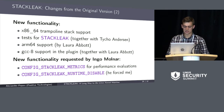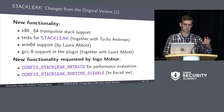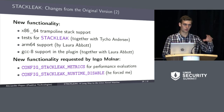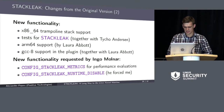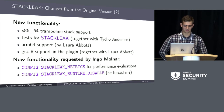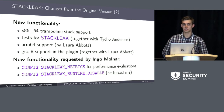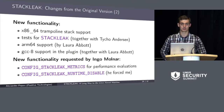New functionality was also requested by Inge Molnar: the StackLeak metrics feature which allows you to see how much stack space is used during the current and previous system call for some process. And the StackLeak runtime disable option — I don't really like it because I don't like runtime disabling of security features, but Inge Molnar insisted. So I added a sysctl under a config option which is disabled by default, as some kind of compromise.